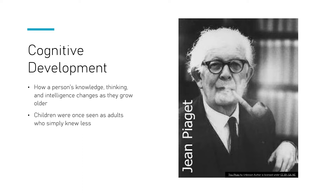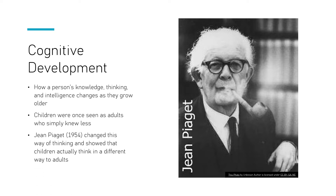Children were once seen as adults who simply knew less. But Piaget changed this view. He did lots of studies and challenged this way of thinking, saying that children completely think in a different way to adults. It's not that they had all the ability to think and just knew less — their thinking was actually different.